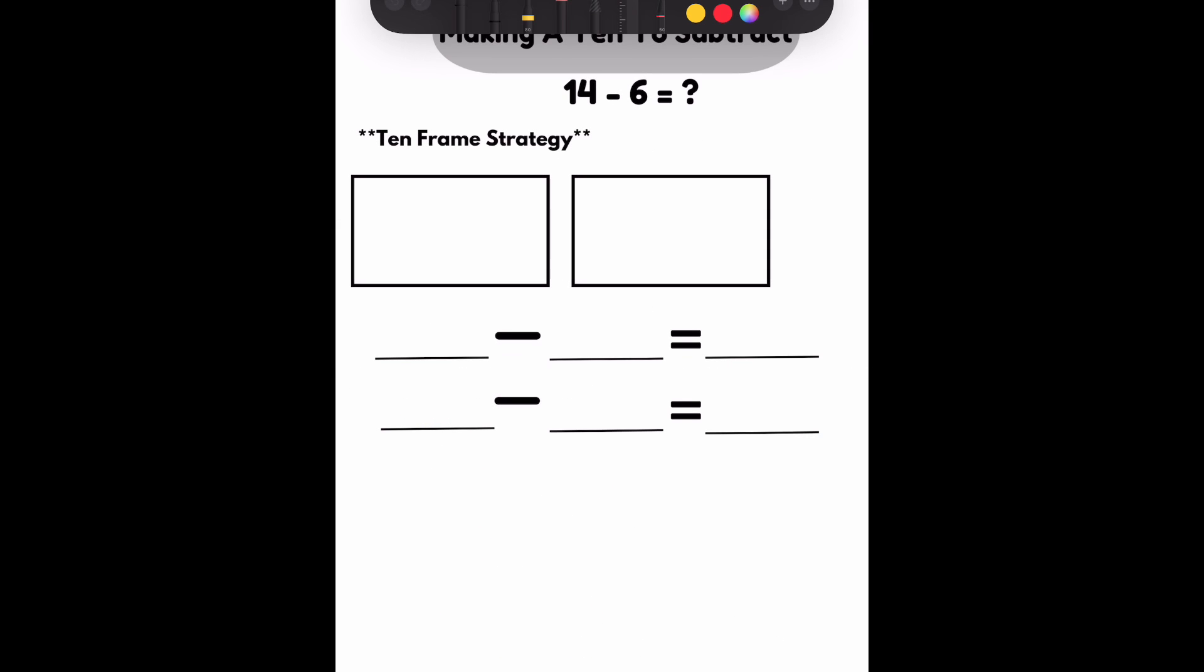We have a different equation now. 14 minus 6 equals question mark. I know that I need to start making my 10 frame. Make sure you have a total of 10 squares. I'm going to fill in 14. I know if I fill in one whole frame, that's 10 and then 4 more.